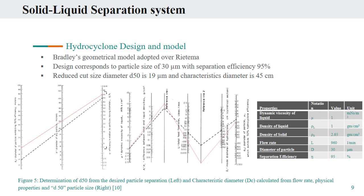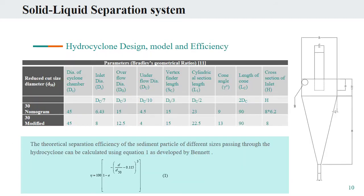For design purposes, particle size to be separated is chosen to be 30 microns with separation efficiency of 95%. From the nomogram and physical properties table shown in Figure 5, reduced cut size diameter D50 corresponds to the value of 19 microns and the characteristic diameter is 45 cm. Following Bradley's geometric ratios for modeling the hydrocyclone, other parameters are calculated as shown in the model. The model of the hydrocyclone is modified to obtain the best separation efficiency after preliminary CFD analysis. The overflow pipe diameter is reduced from 15 cm to 12.5 cm, and the underflow pipe diameter is reduced from 5 cm to 4 cm.